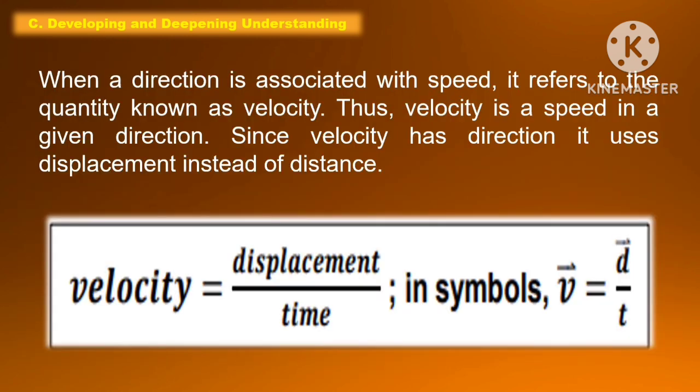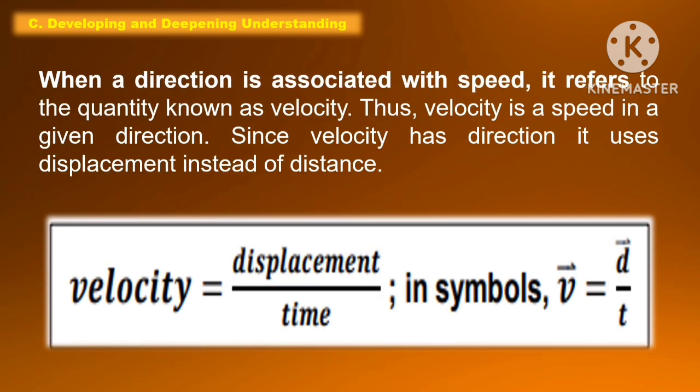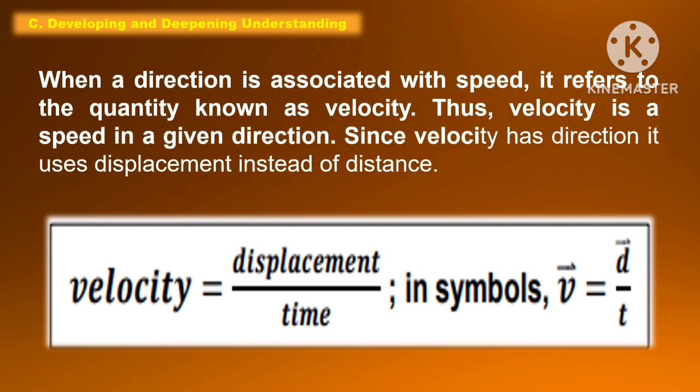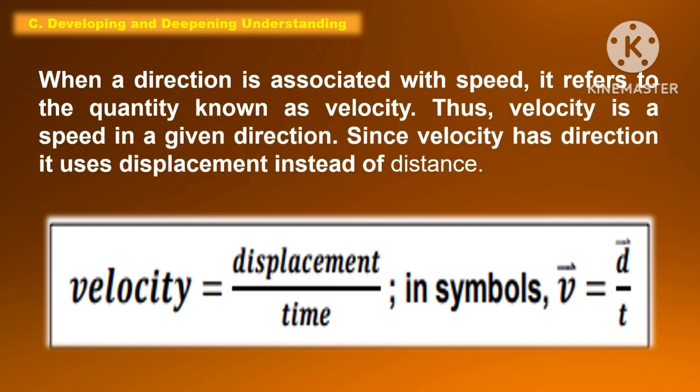When direction is associated with speed, it refers to the quantity known as velocity. Thus, velocity is speed in a given direction. Since velocity has direction, it uses displacement instead of distance.